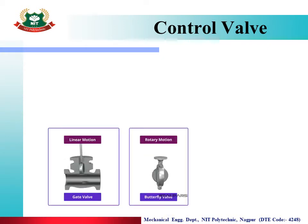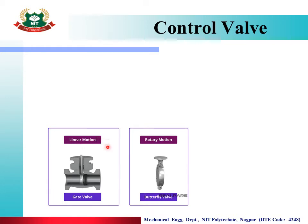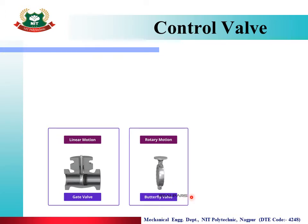Valves can be classified by motion type: linear motion valves such as the gate valve, and rotary motion valves such as the butterfly valve. The gate valve and butterfly valve are examples of these two motion categories.